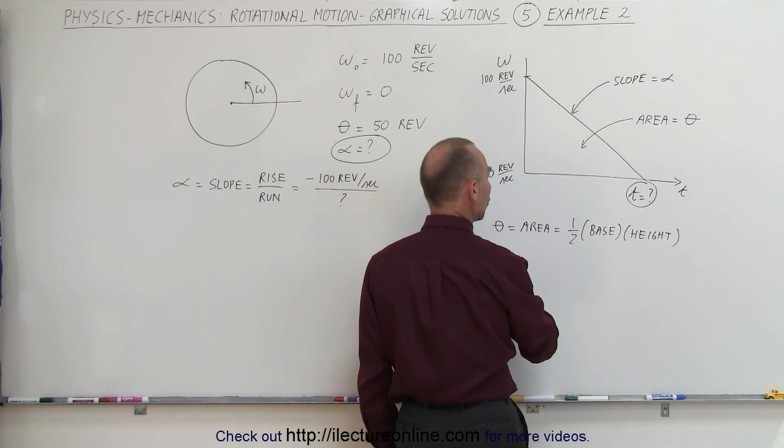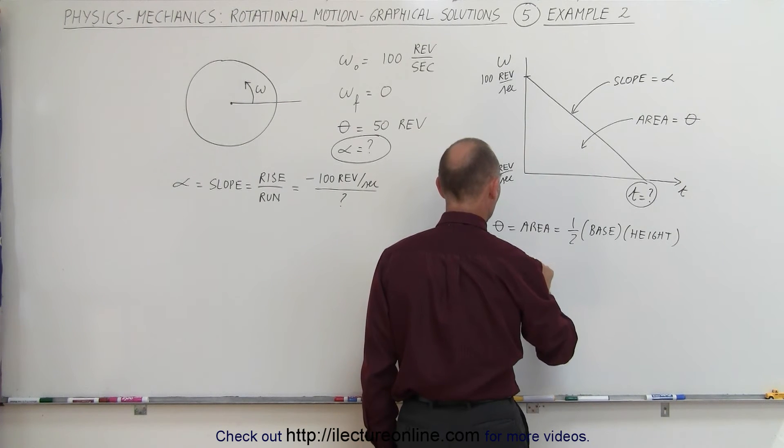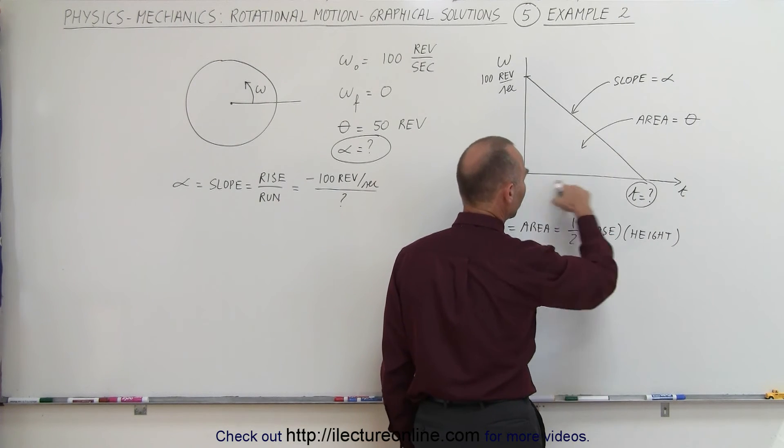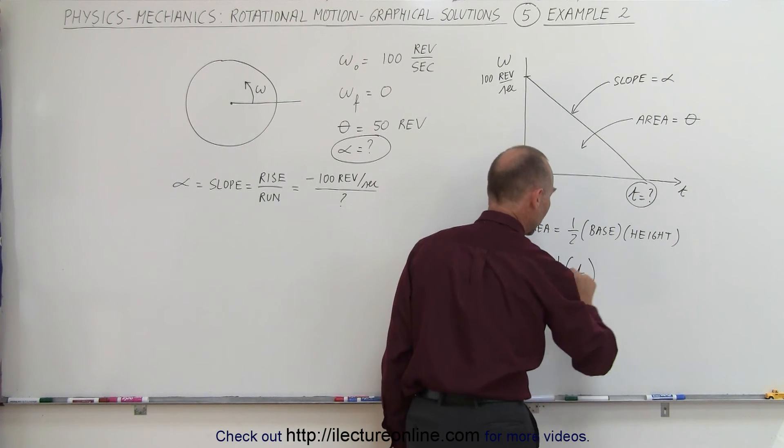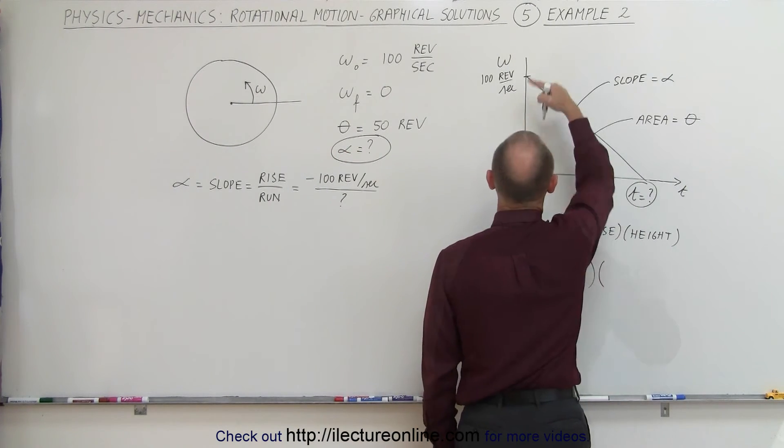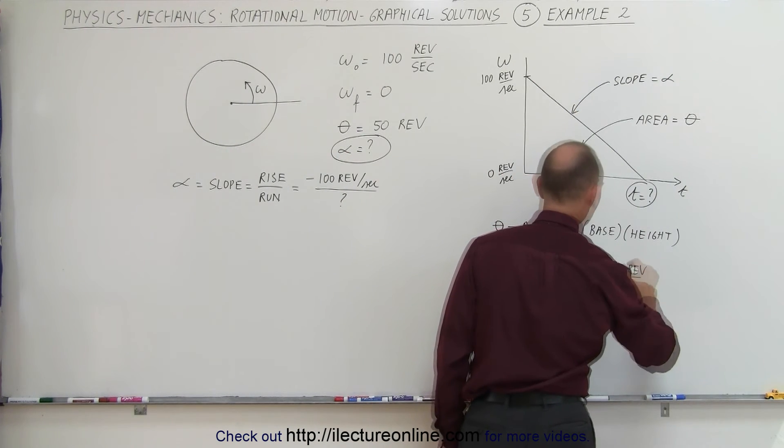So in this case theta, which is a known quantity, we can say that 50 revolutions equals one-half times the base. The base will be the time elapsed, which we don't know, so we put down the value for that, t, times the height. The height here is 100 revolutions per second.